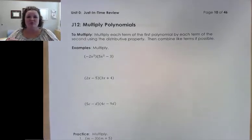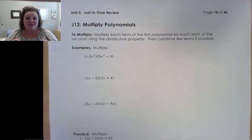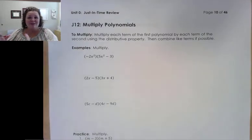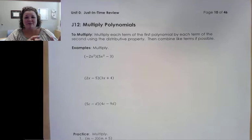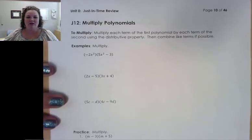Multiplying polynomials just means we're going to multiply every term of the first polynomial by every term of the second polynomial. Whether you're distributing one term or many terms, as long as every term of the first one gets multiplied by every term of the second one, we should end up with the right answer.